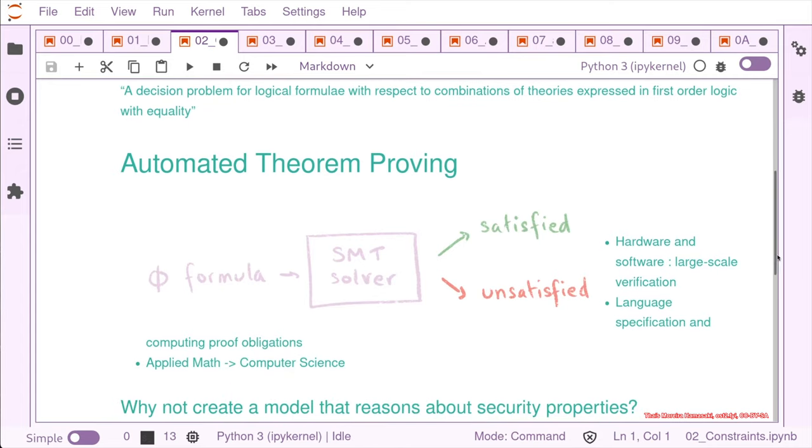So the whole idea of using SMT solvers for security is to create a model that reasons about security properties that we want to check.